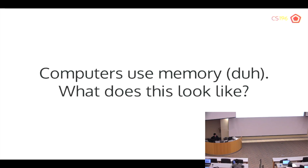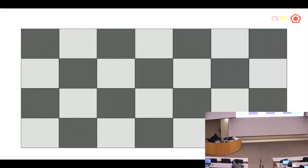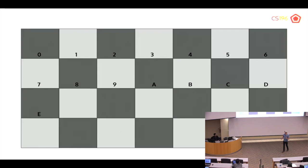Rust handles memory differently than C and C++, but you still have to think about it. Memory can be thought of as blocks that store information, labeled by numbers: 0, 1, 2, 3, 4... In computer science we traditionally use hexadecimal. So instead of 10, we use A. A represents 10, B represents 11, C is 12, D is 13, E is 14, F is 15.